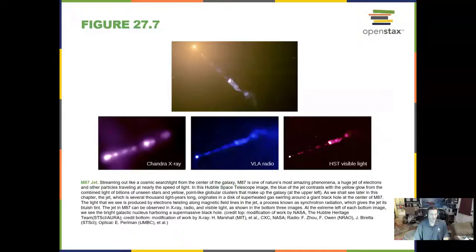In one quasar, maybe the most famous, M87 is its name, we can see jets of material being spun out from that quasar. We see it in the radio, visible, x-ray, all of those.